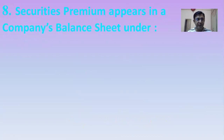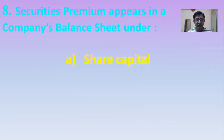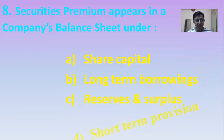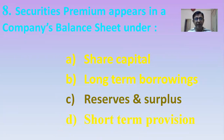Next MCQ: Securities premium appears in a company's balance sheet under which head? Option A: Share capital. Option B: Long-term borrowings. Option C: Reserves and surplus. Option D: Short-term provision. The right answer is Reserves and surplus — securities premium will be shown under the head Reserves and surplus.